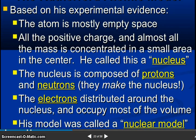So Rutherford atomic model based on his experimental evidence. The atom is mostly empty space. All positive charge and almost all the mass is concentrated in a small area in the center. He called this the nucleus. The nucleus is composed of protons and neutrons. The electrons are distributed around the nucleus and occupy most of the volume. His model was called the nuclear model.